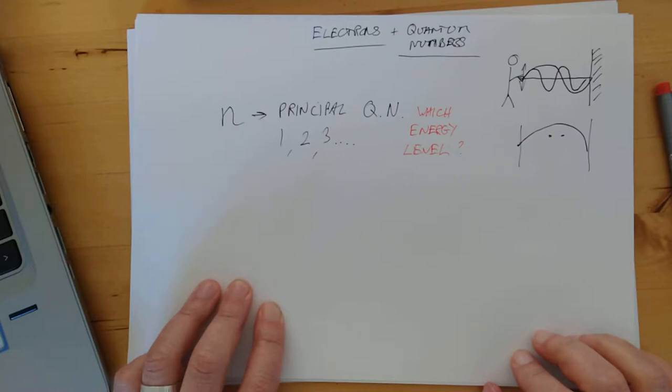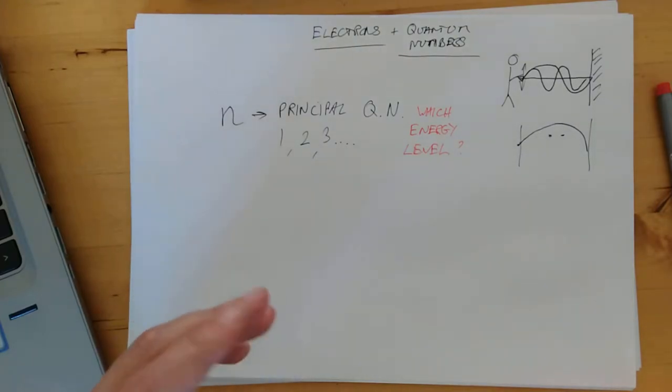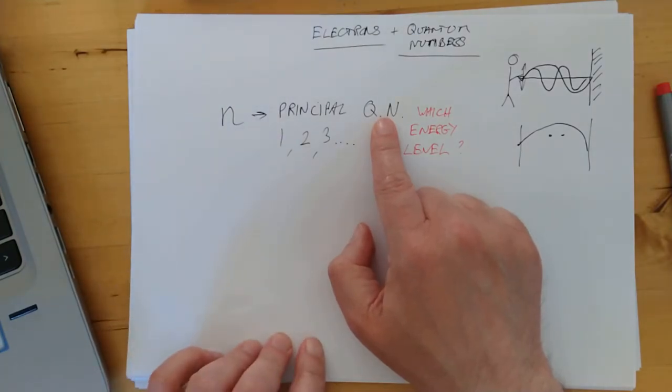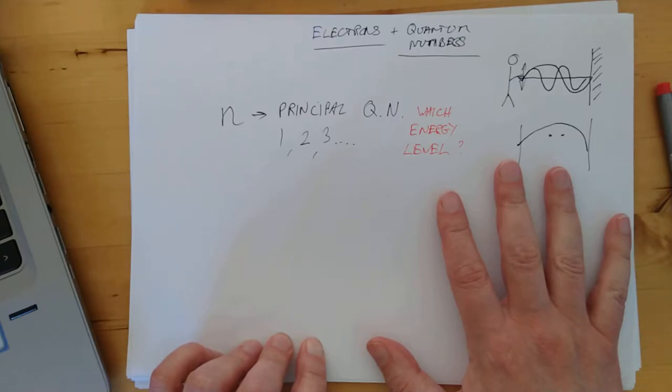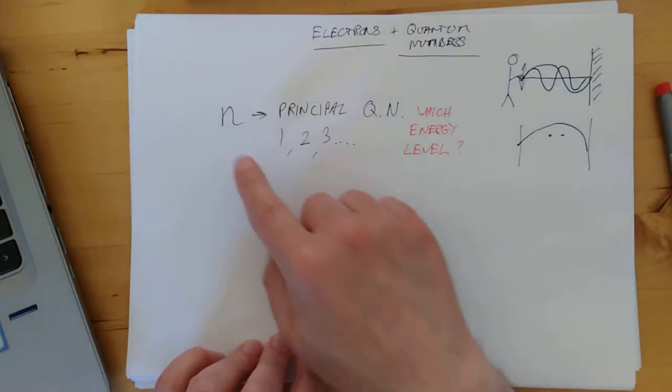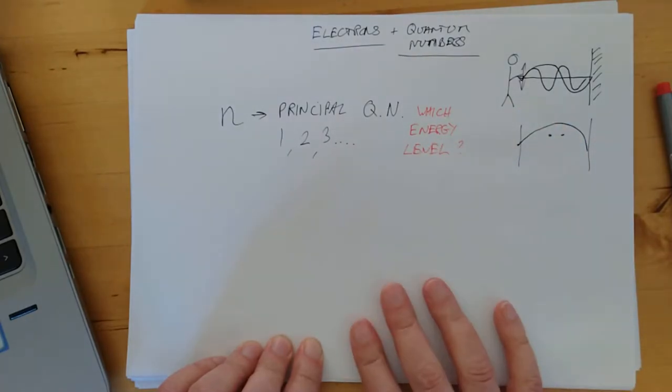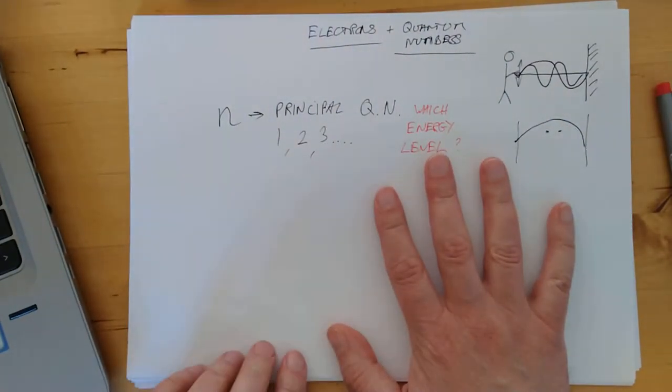It tells you which energy level this particular electron occupies. Can I flash you back to something that I did when I was a child? My address would be 45 Sutherland Drive, Denny, Stirlingshire, and then I would extrapolate that address on a bit more. I'd go Scotland, then UK, then the planet Earth, then the solar system, and the Milky Way. That's basically what these quantum numbers will do for any given electron. It's like the address of the electron to a very specific degree.